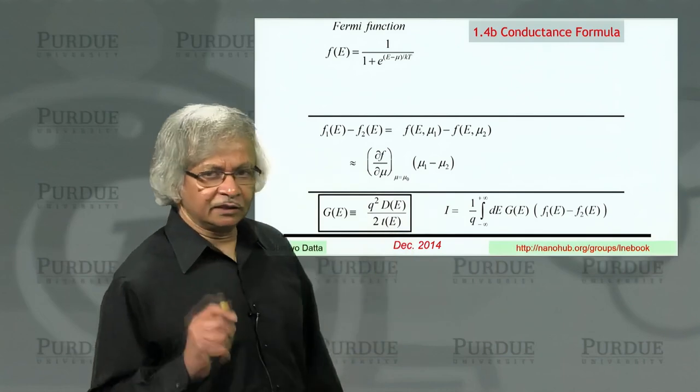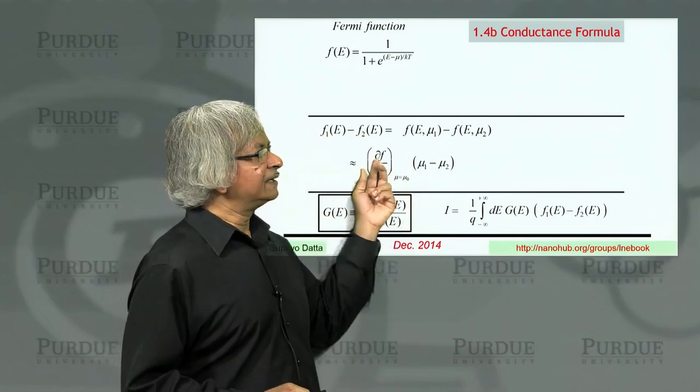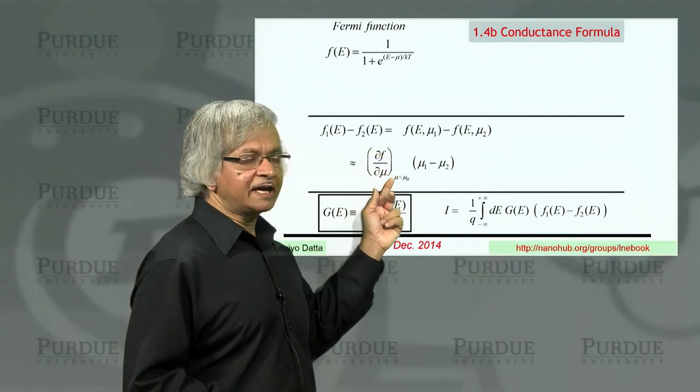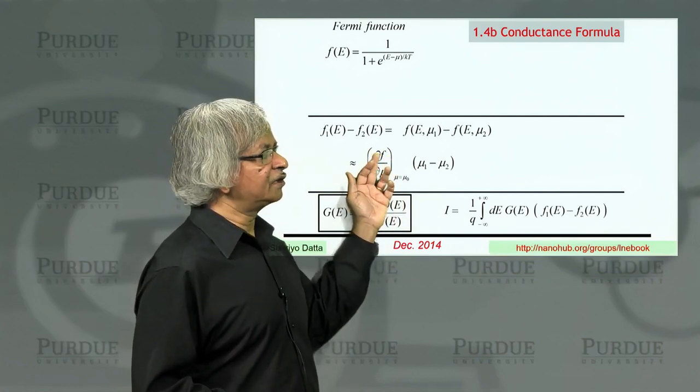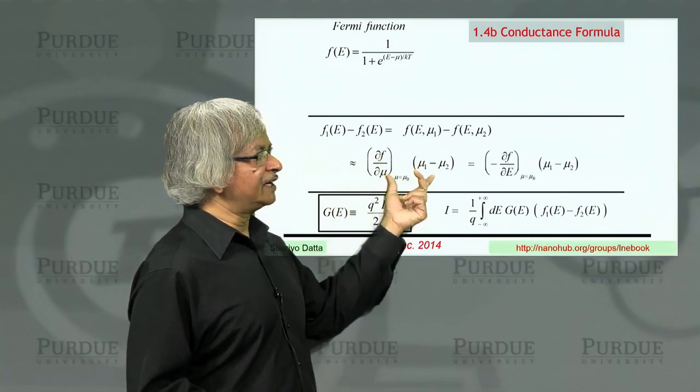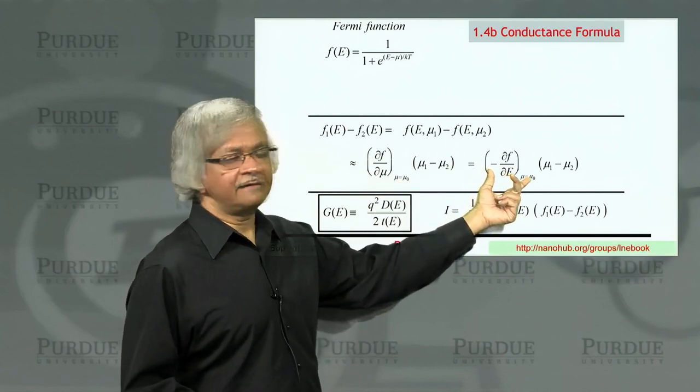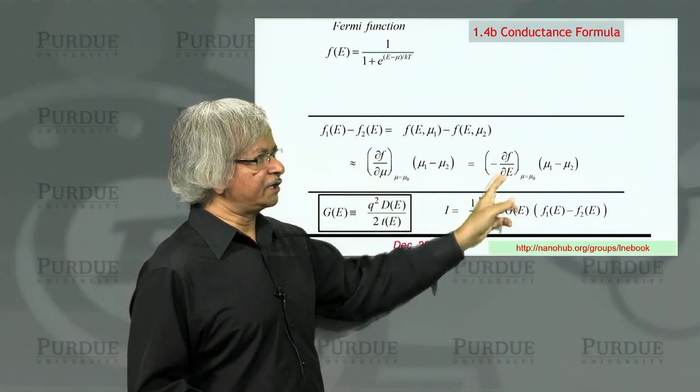Now what takes a little thinking, and I'll explain that in a minute, is that partial of F with respect to mu is actually equal to the partial of F with respect to energy. So instead of this del F del mu, you can write minus del F del E. So let me explain why.